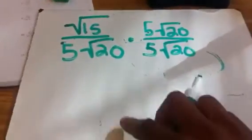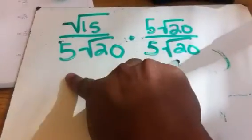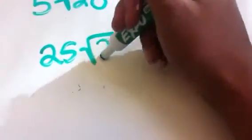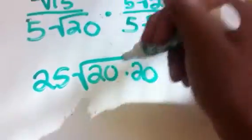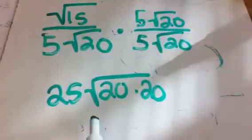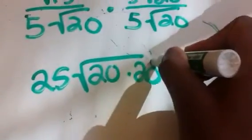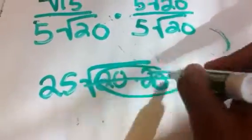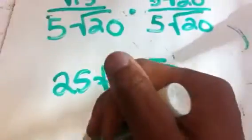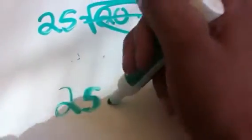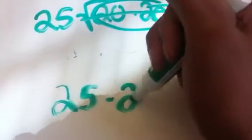Let's multiply our denominator. We're going to multiply our coefficients first — 5 times 5 is 25. Then we have 20 times 20 in our radicand. So for your pairs, those come out. So in our denominator, we have 25 times 20.